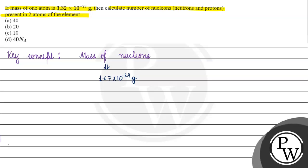We know the mass of one atom is 3.32 × 10 to the power minus 23 grams. We need to find the number of nucleons. So we can write: number of nucleons equals mass of one atom divided by mass of nucleons.